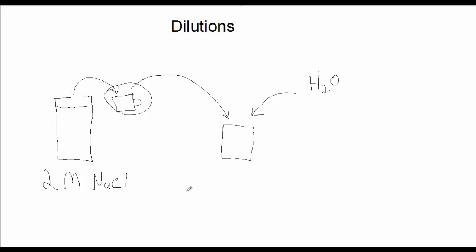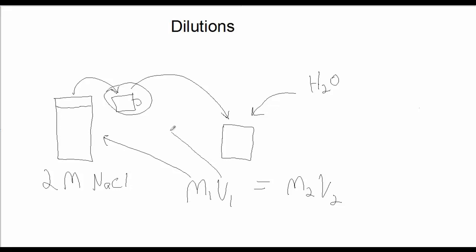There's an equation that relates to this process: M1V1 = M2V2. This is the magic equation. M1 is the more concentrated solution, and V1 is the small amount of the concentrated solution we're going to dilute. M2 is the diluted concentration, and V2 is the total volume of our new solution.